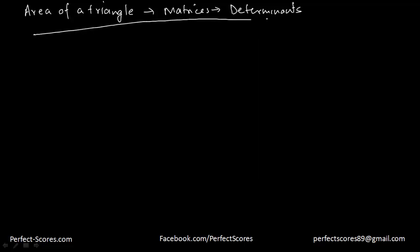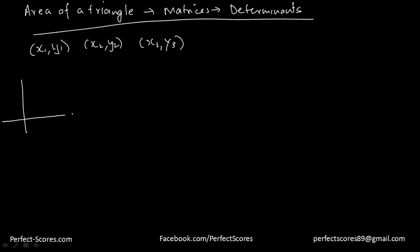Let's suppose we have a triangle with three coordinates: x1, y1 and x2, y2 and x3, y3. So we have these three points for a triangle, and we are supposed to find the area of this triangle.